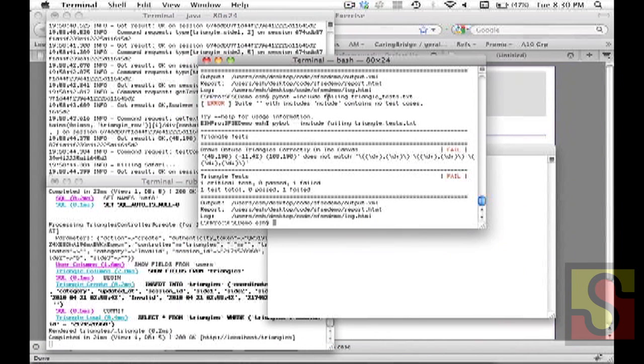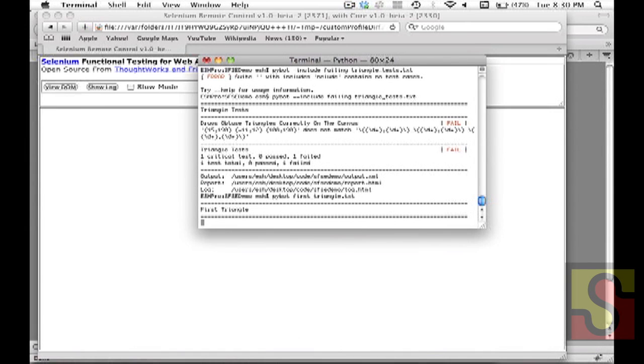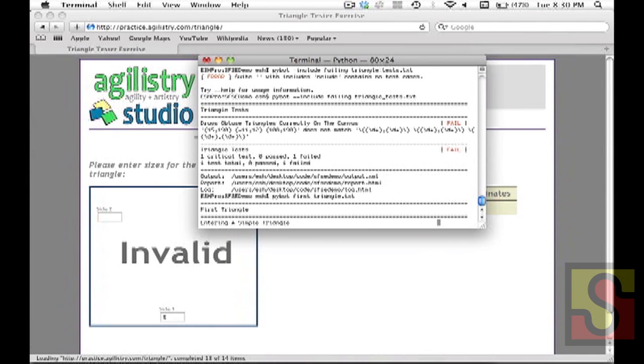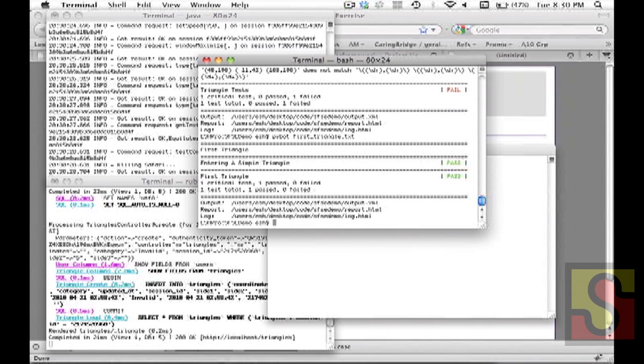When we execute that same test case through Robot Framework we get—make sure I execute the right one—I can execute that on the command line PyBot first triangle. We should see it pop up. And there it's just running that same test.